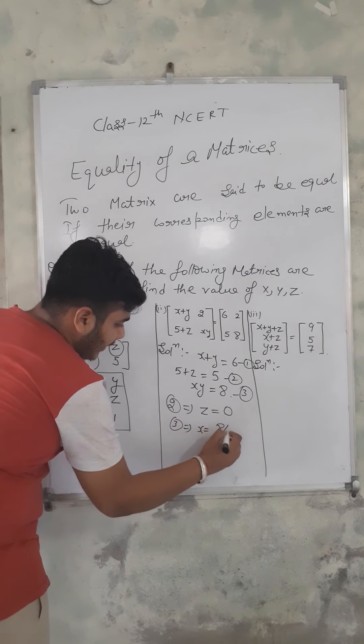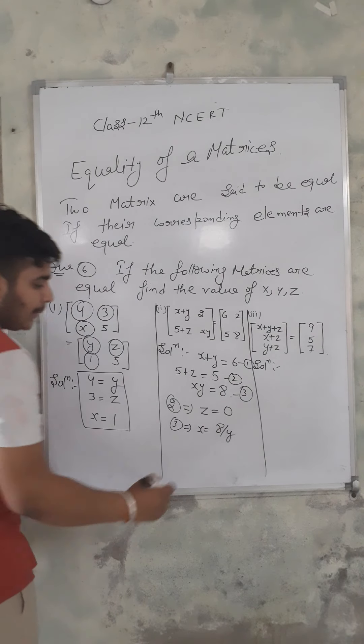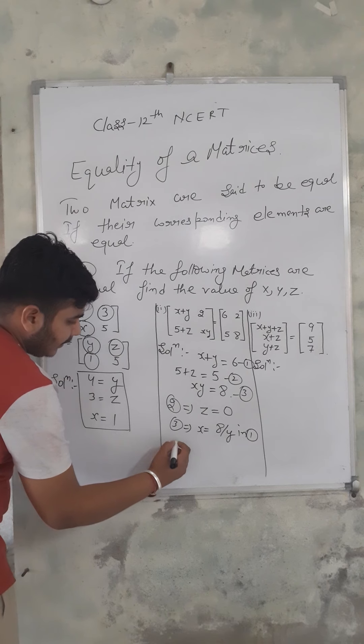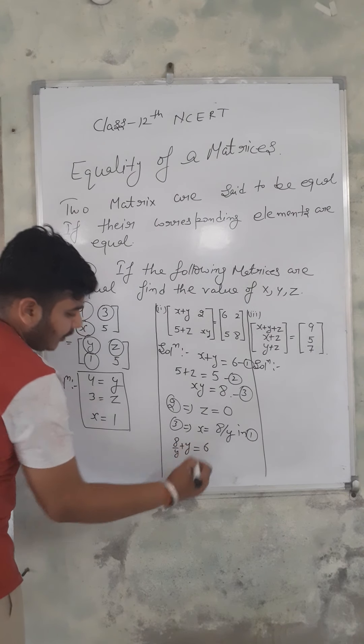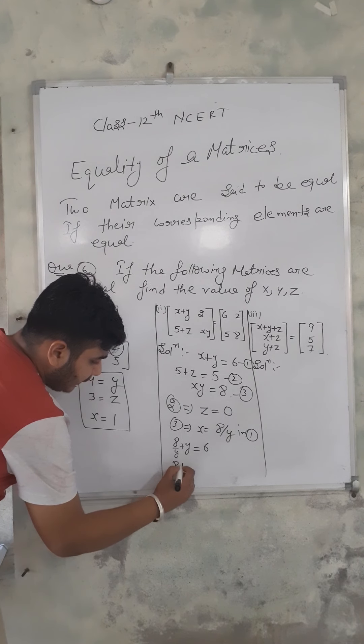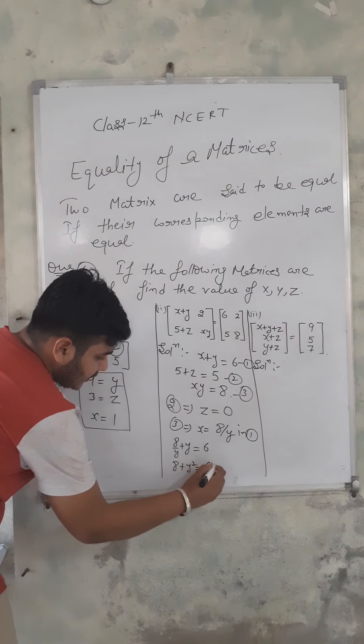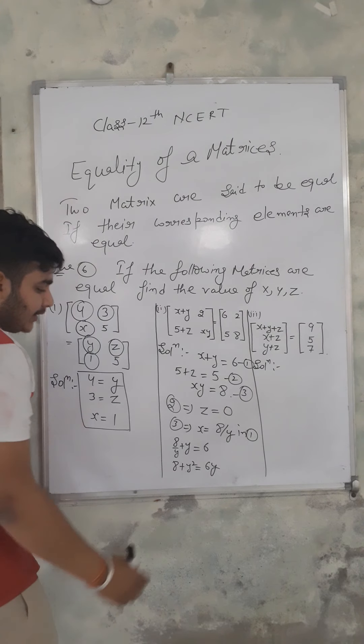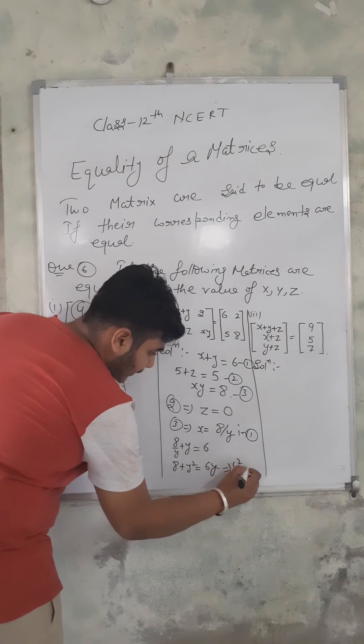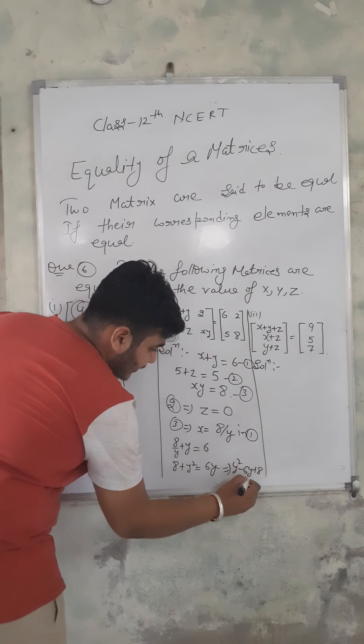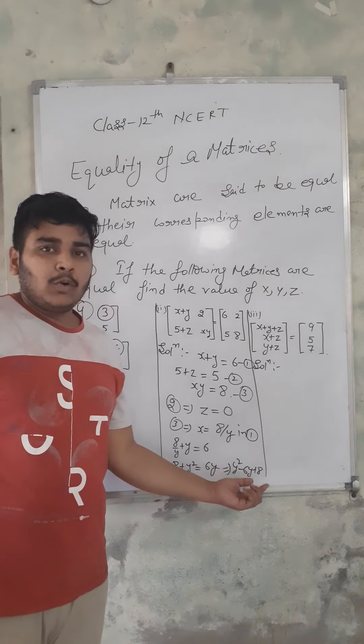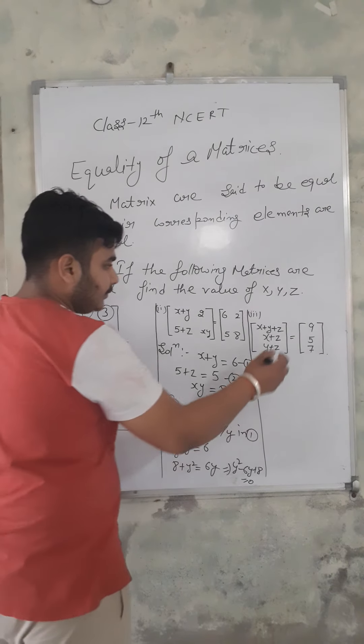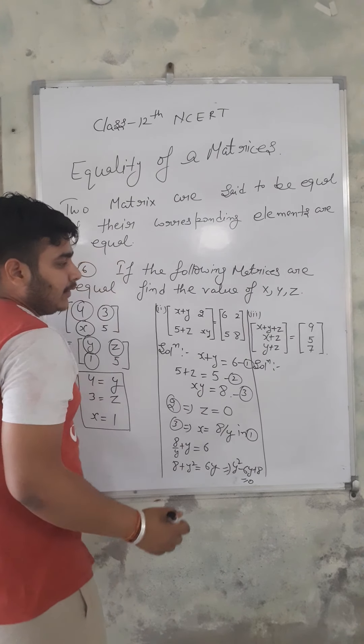Since xy equals 8, we can write x equals 8 over y. Substituting into x plus y equals 6: 8 over y plus y equals 6. This becomes y squared minus 6y plus 8 equals zero. Factorize to find both values of y.